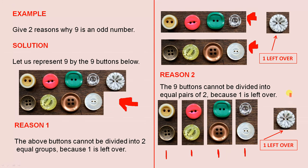So there are two reasons why nine is odd, because in each case, you have one left over.